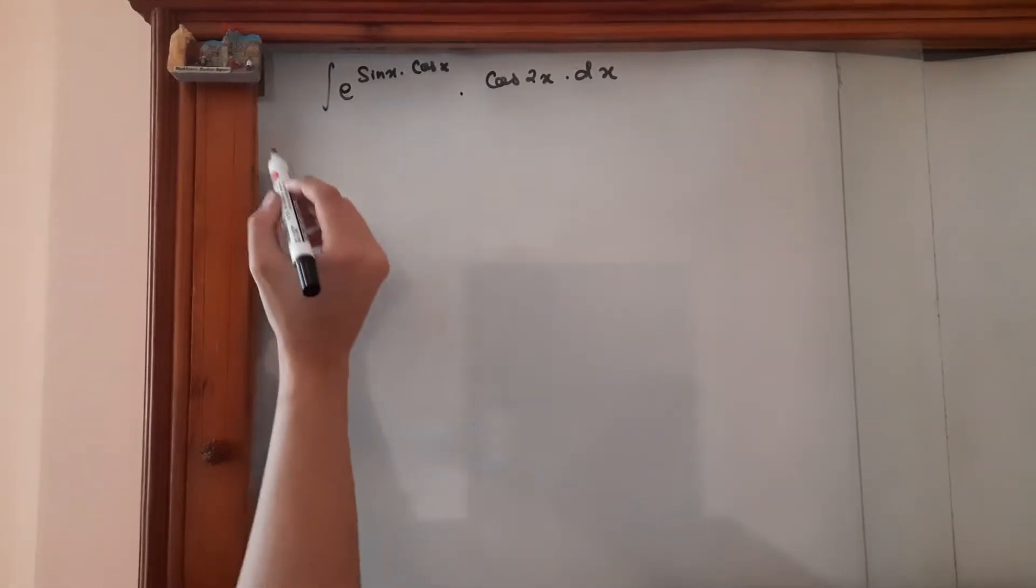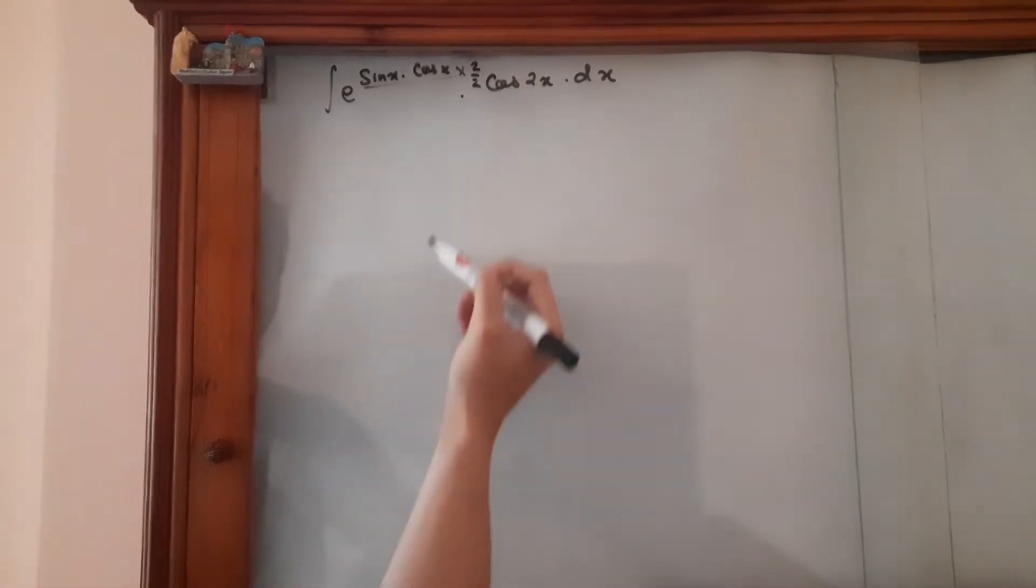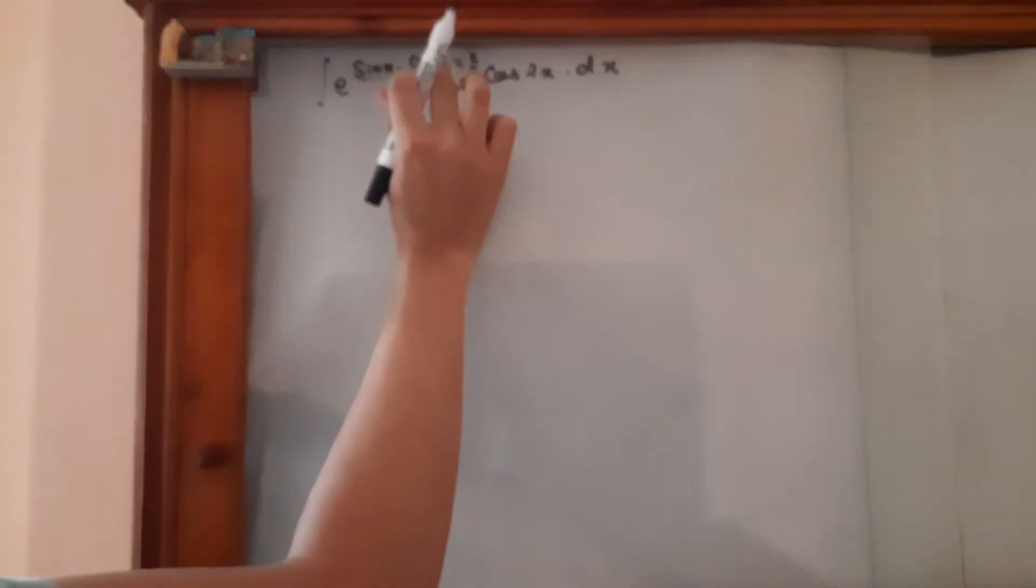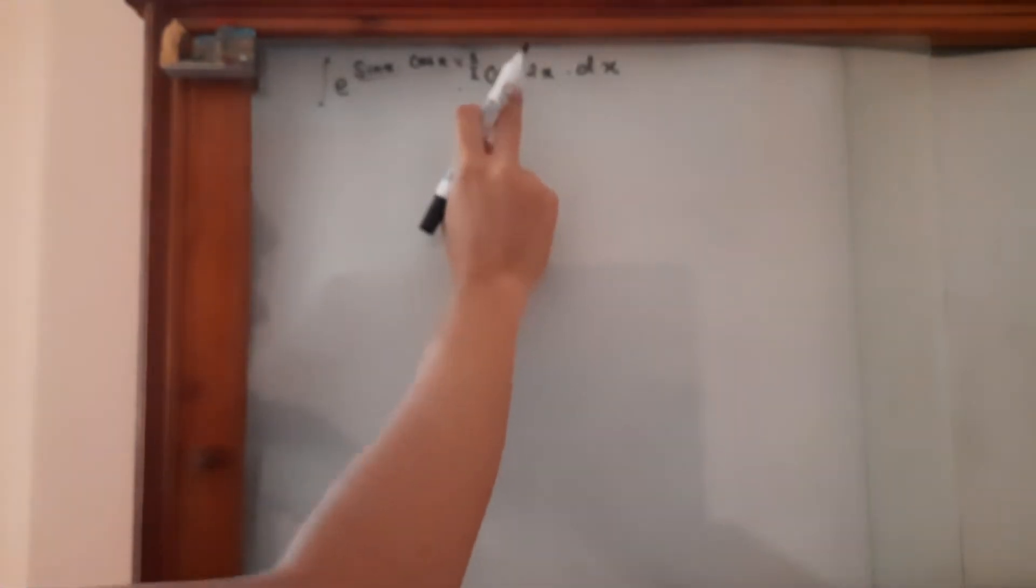If we multiply this term with 2 upon 2 it makes no difference as it cancels, but then 2 sine x times cos x is sine 2x and the derivative of sine 2x is somewhat equal to this.